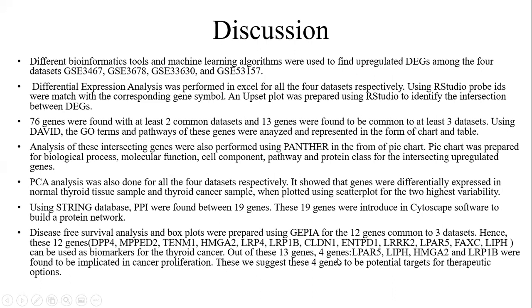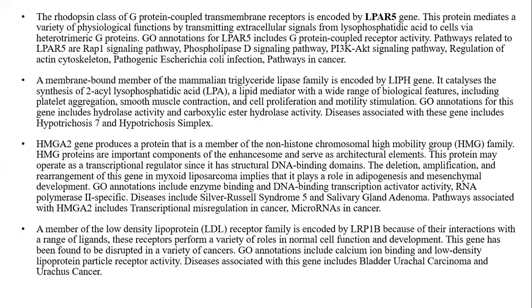Out of these 13 genes, four genes — LPAR5, LIPE, HMGA2, and LRP1B — were found to be implicated in cancer proliferation. We suggest that these four genes are potential targets for therapeutic options, and more information about these four genes is collected here.